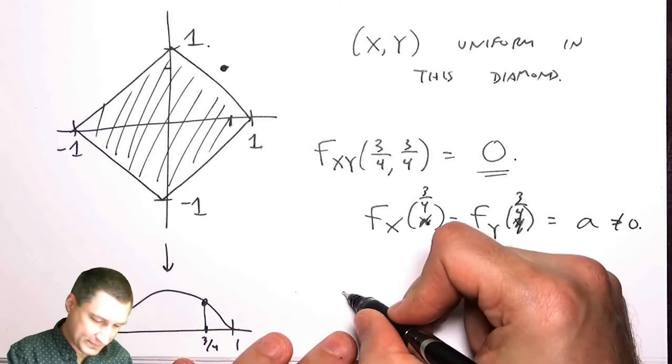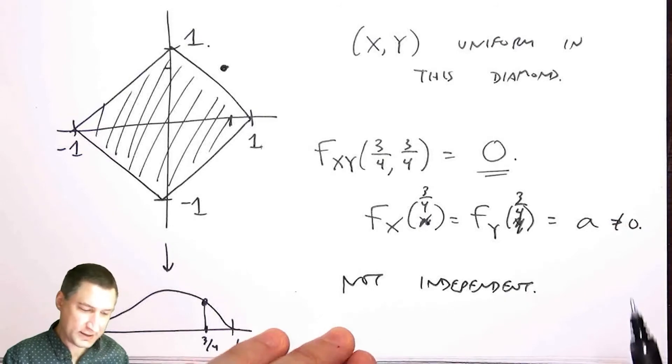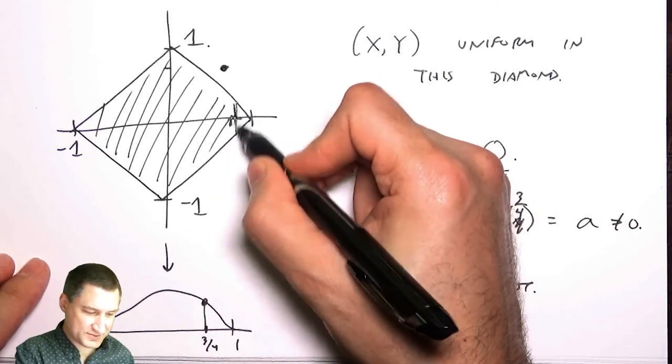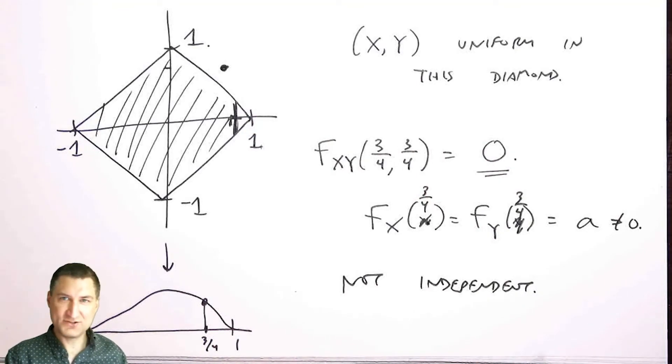Kind of one way to think about this is that, you know, the larger X is, the smaller the range of Y. So clearly X and Y are related to each other in a way that one has some bearing on the other one.